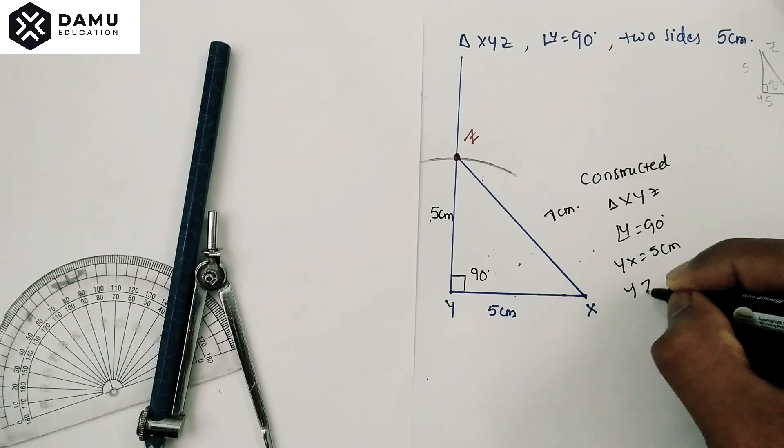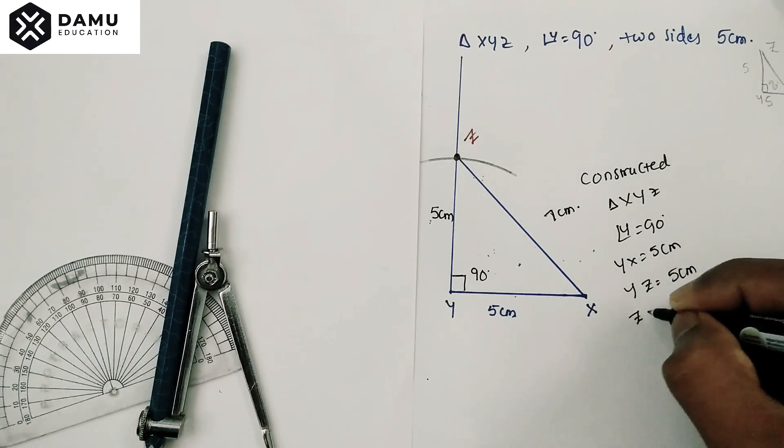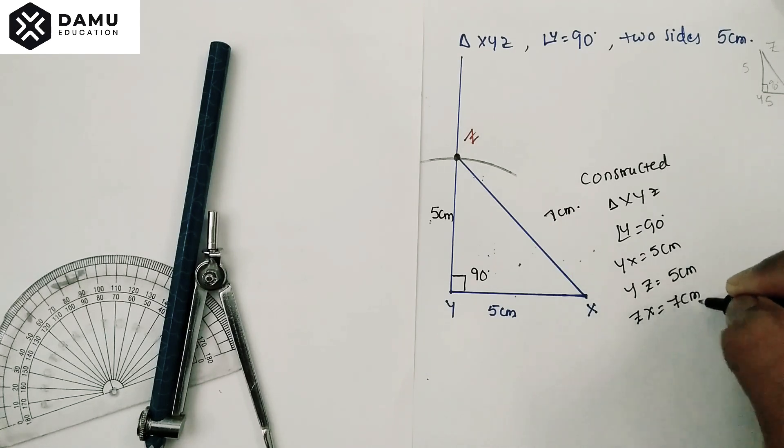YZ is equal to 5 centimeters and ZX is equal to 7 centimeters.